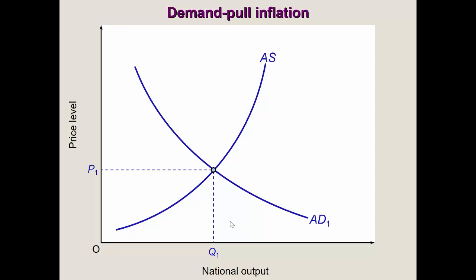Let's look at demand-pull inflation first. This curve here is the aggregate supply of the whole economy. At a given price level, the output is Q1 — that's the equilibrium in the economy. On the y-axis you have the price level, which you can assume is the GDP deflator, CPI, or RPI index. So P1 is the price level at equilibrium output Q1, which is real national output. You also have the aggregate demand curve.